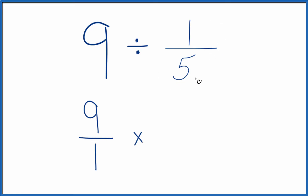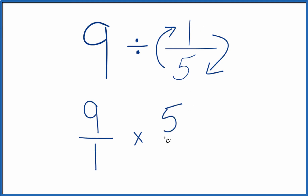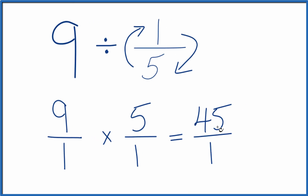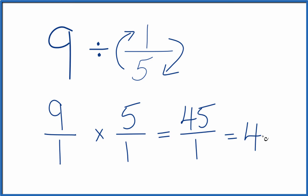To take the reciprocal of a fraction, we move the numerator to the bottom and the denominator to the top. So now we have 5 over 1. When we're multiplying these fractions, we multiply the numerators and then the denominators. 9 times 5 is 45, and 1 times 1 is 1. 45 divided by 1 is just 45.